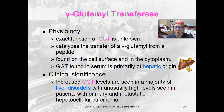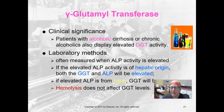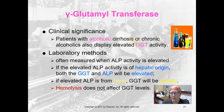GGT, gamma glutamyl transferase, is not part of a CMP or liver function test — it's usually ordered separately. We're still untangling the exact functions of GGT, but we know it has to do with detoxification. The GGT enzyme is found on the cell surface and in the cytoplasm, and when you measure GGT in the serum, it's primarily of hepatic origin, coming from the liver. Many liver disorders can increase GGT levels, but they're highest in patients with metastatic hepatocellular carcinoma. The biggest use of GGT is for alcoholic cirrhosis or chronic alcoholics, because alcohol is a toxin and GGT helps detoxify, so you'll see increased GGT activity in the blood.